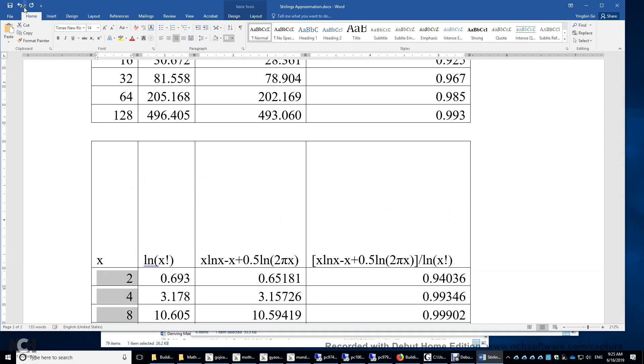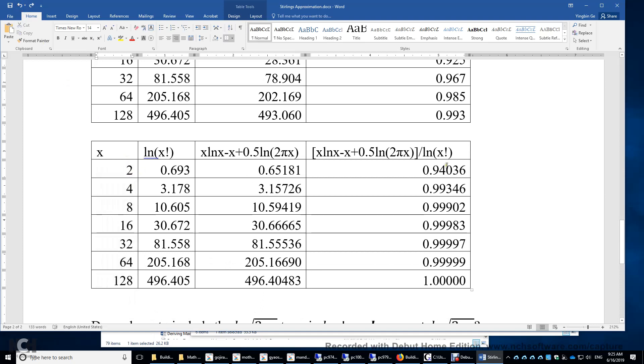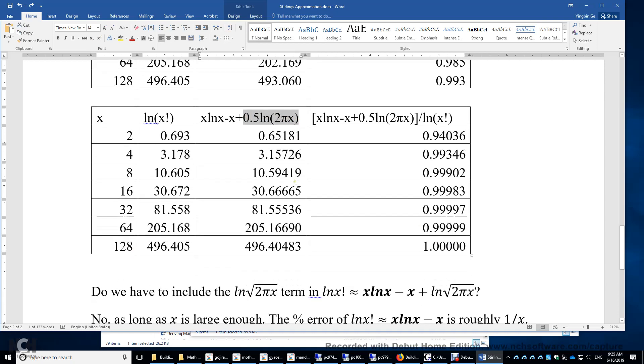Even when x equals 2, look at the ratio. When x equals 2, the ratio is really close to 1 already. It's 94%. The percent error is only 6%. When x equals 4, it's 99%. When x equals 8, well, you have a percent error smaller than 0.1%. It's really accurate already. And then when x equals 64 and 128, you can see the percent error is negligible. So it seems that we need to include the third term to have really accurate approximation.